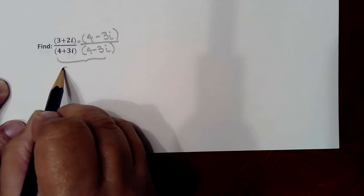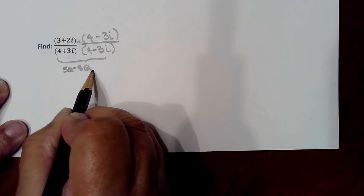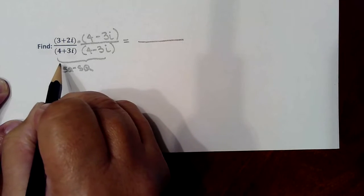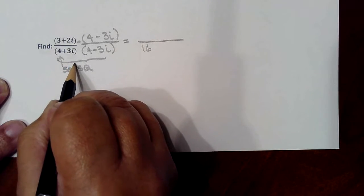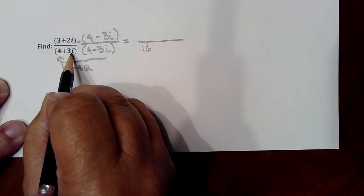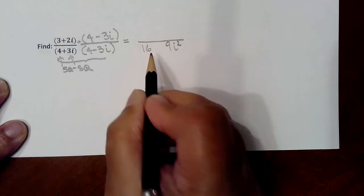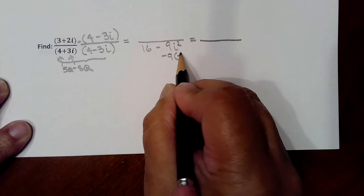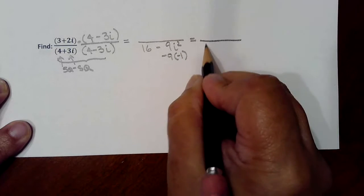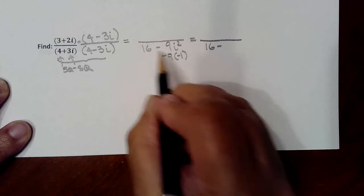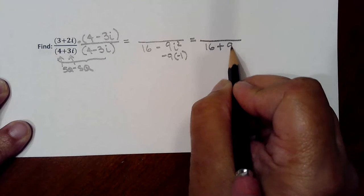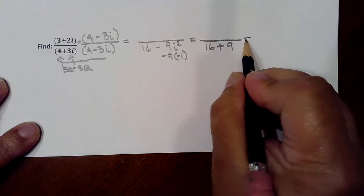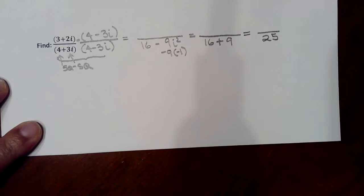In the bottom, because you're multiplying conjugates, you can use the shortcut: square minus square. You only need to be working with one of the parentheses when you do the square minus square. Working on the bottom, I'm squaring that front term to get 16, then squaring the back term: squaring the 3 gives 9, squaring the i gives i squared, with a minus in between. Since i squared is defined as negative 1, negative 9 times negative 1 is positive 9, so the denominator becomes 25.